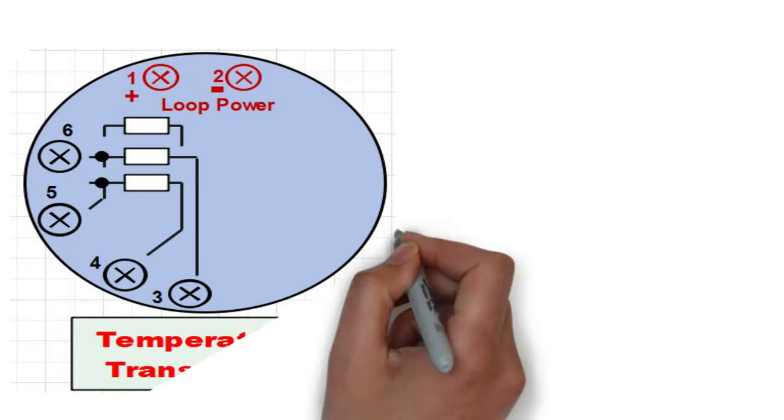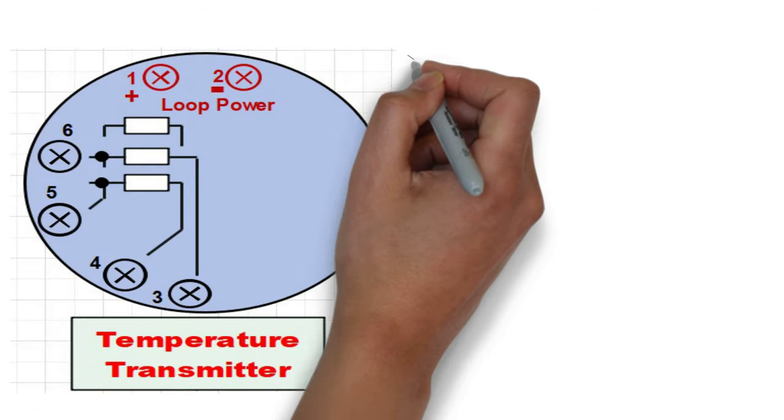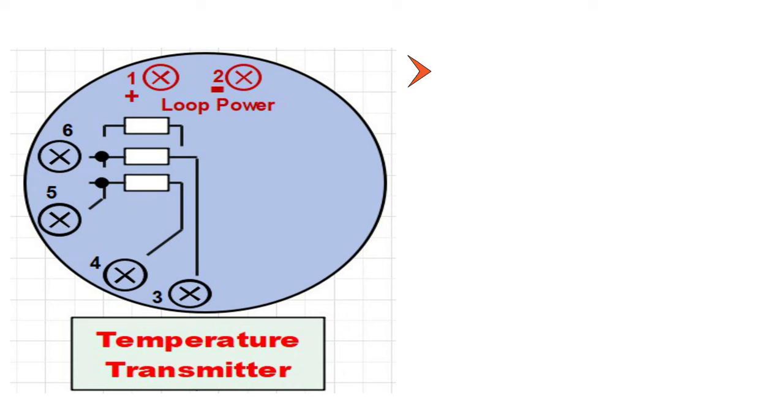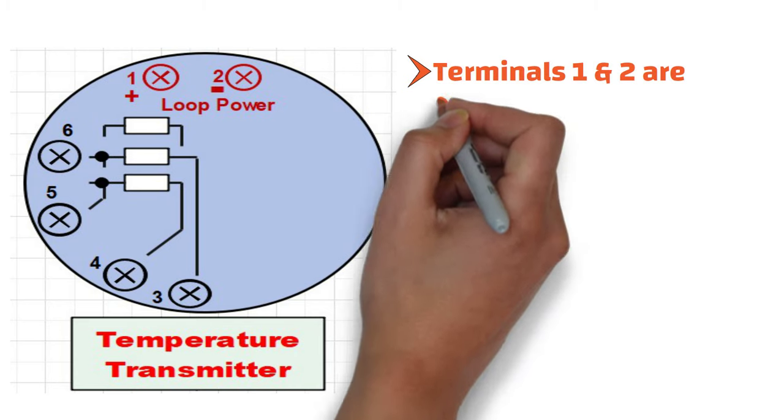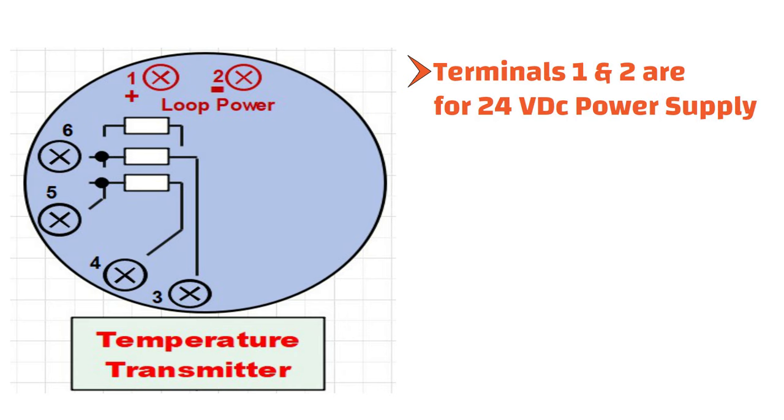As you can see, this is the general layout of a temperature transmitter. In this layout, terminal number 1 and terminal number 2 are for 24-volt DC power supply.